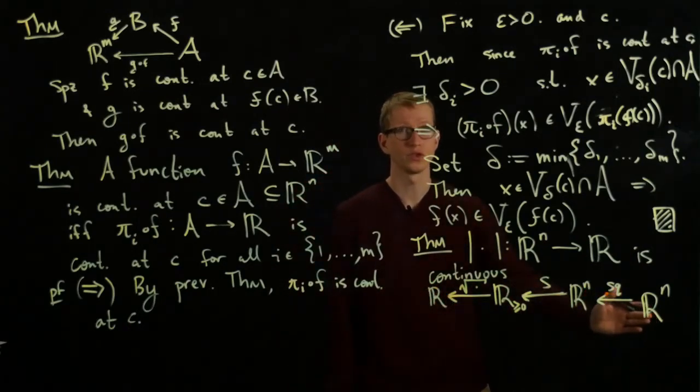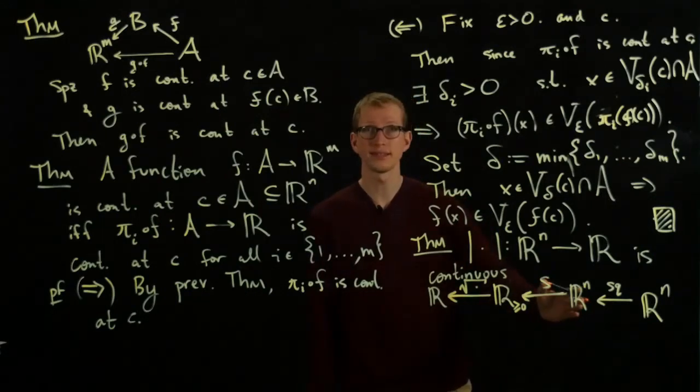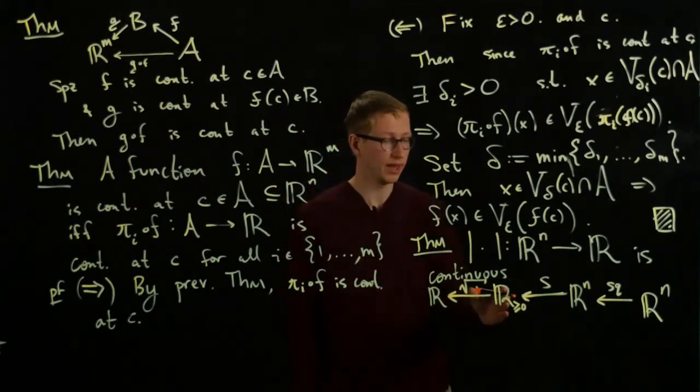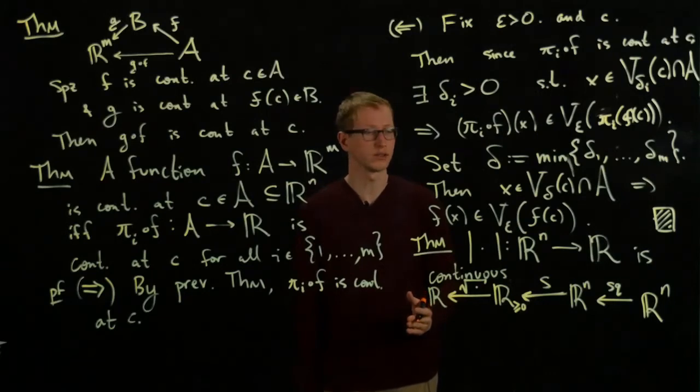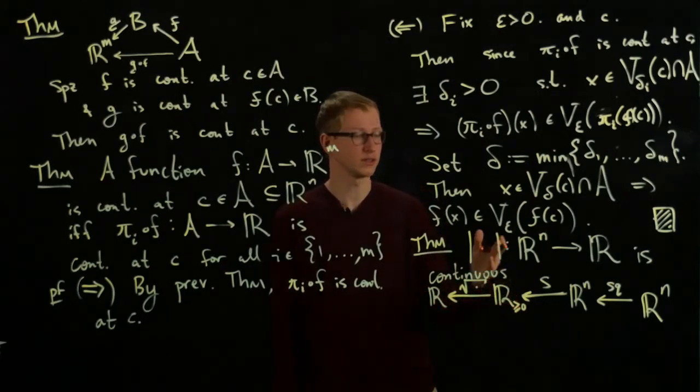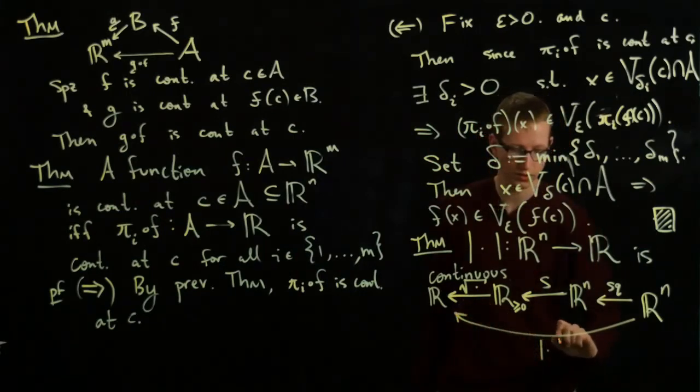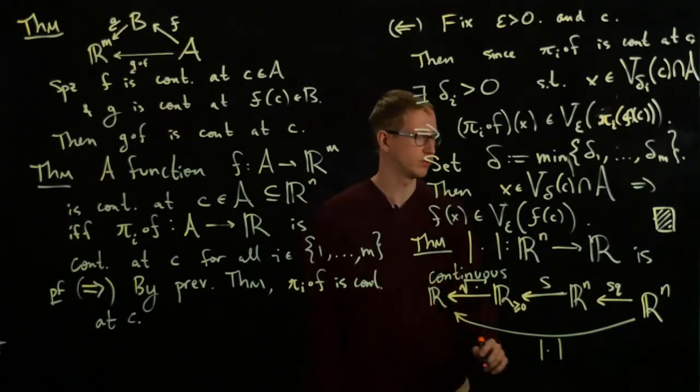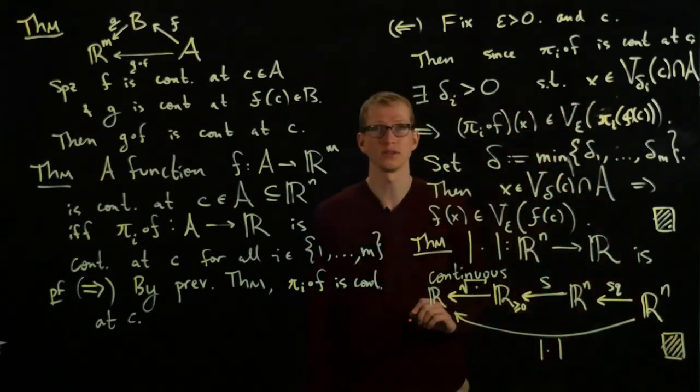And it's continuous, as we probably know from the first semester of analysis. So what do we have here? We have squaring each entry, which is a continuous function. Then we take the sum of all of the entries. That's a continuous function by our previous theorem. And we take the square root, which we know is a continuous function. So by this composition rule, we know that the composition of these functions is continuous. But the composition of these functions is exactly the norm function. So these functions are equal, i.e., this diagram commutes, and by continuity of all of its constituents, we know that this norm function is continuous as well.